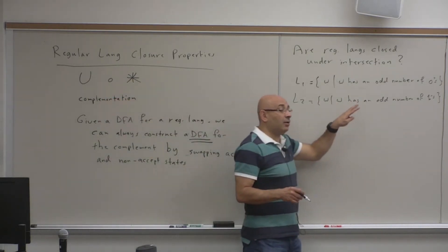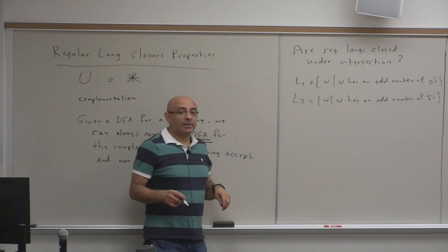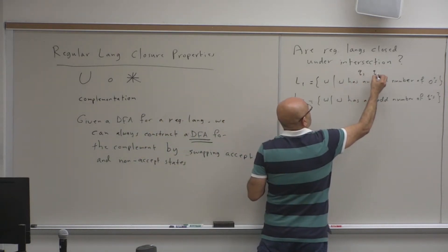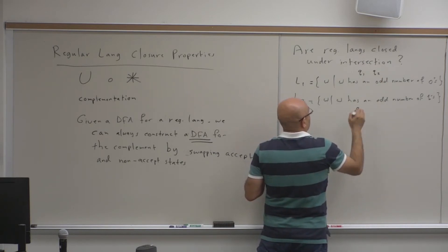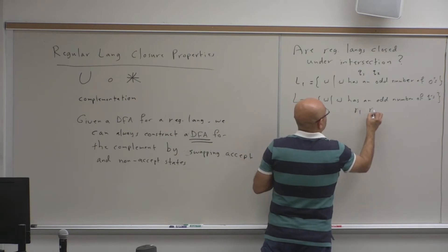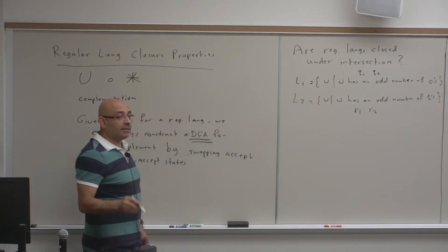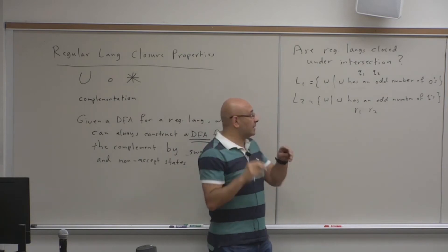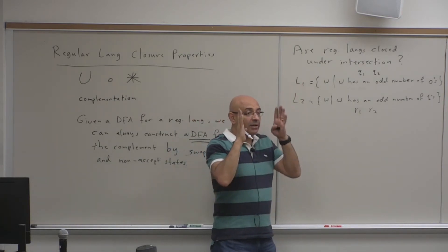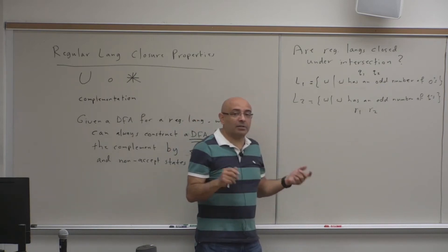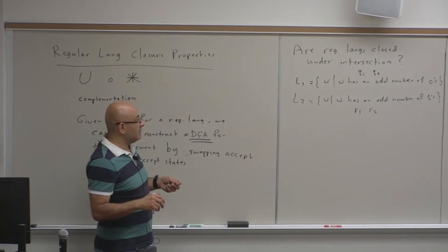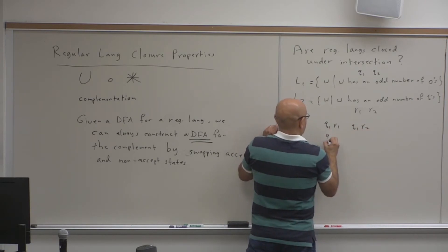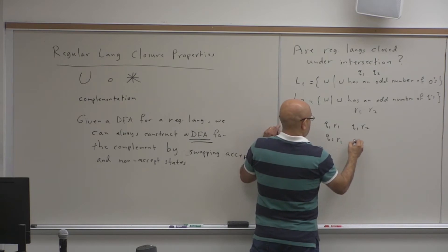To construct a DFA for the intersection, we have to keep track of all states using the cross product. If the first DFA has states Q1 and Q2, and the second has states R1 and R2, the cross product has four states: (Q1,R1), (Q1,R2), (Q2,R1), and (Q2,R2) — corresponding to (odd,odd), (odd,even), (even,odd), (even,even).